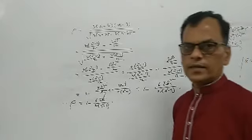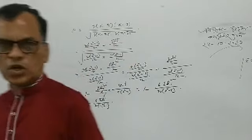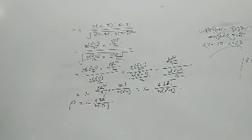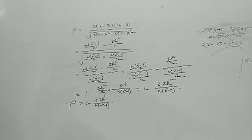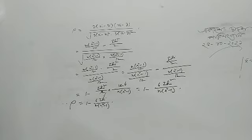Where n is the first n natural numbers (the count of pairs), di equals xi minus yi, xi is the rank of x among the first n natural numbers (rank 1 to n), and yi is the rank of y, also from 1 to n. The rank of x goes from 1 to n, and the rank of y goes from 1 to n.